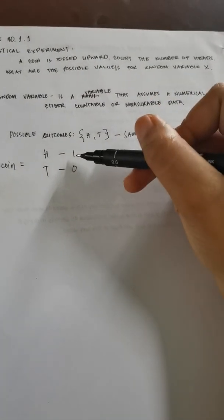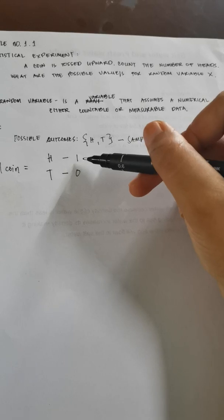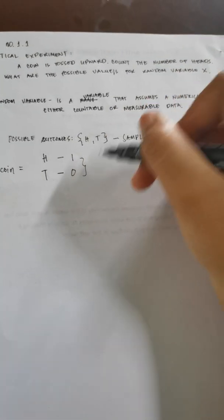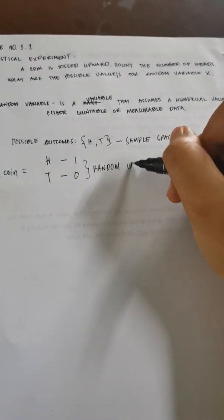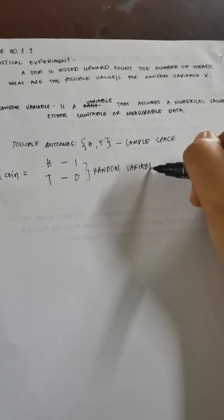So now, this counting of heads as a result of tossing a coin is what we call random variable X. Actually, class, you can represent a random variable in any alphabet that you have there. So it could be represented by A, B, C, D, or anything, any alphabet, any letter of the alphabet. So let's just going to use X.